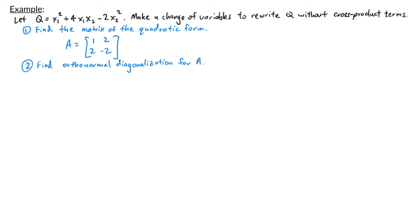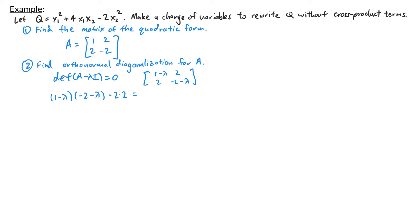Once we have the symmetric matrix A, we find an orthonormal diagonalization by computing eigenvalues and eigenspaces. Setting the determinant of A minus lambda I equal to zero: A minus lambda I is the matrix [1 - λ, 2; 2, -2 - λ]. The determinant gives lambda squared plus lambda minus 6, which factors as (lambda + 3)(lambda - 2) equals 0, so the eigenvalues are lambda equals negative 3 and lambda equals positive 2.